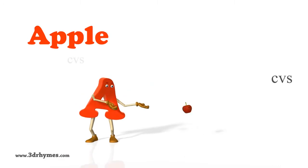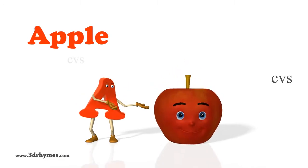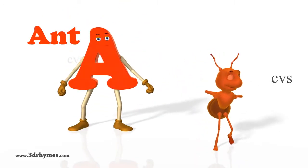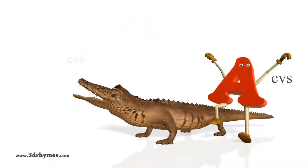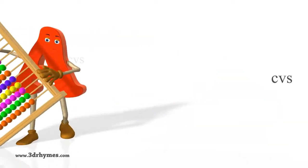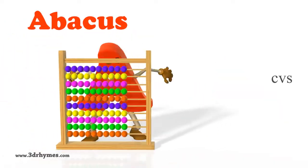A is for Abel. A is for Ant. A is for Alligator. A is for Abacus.